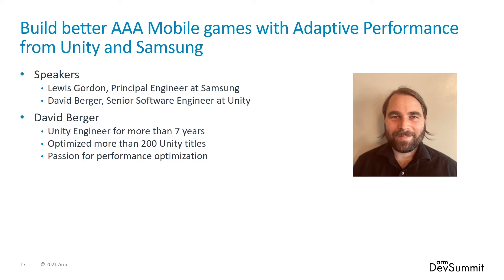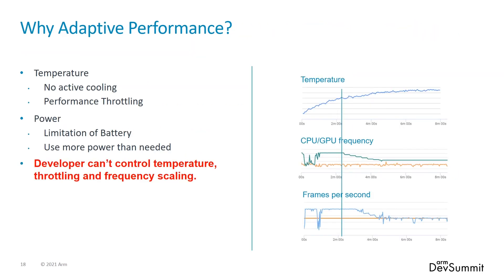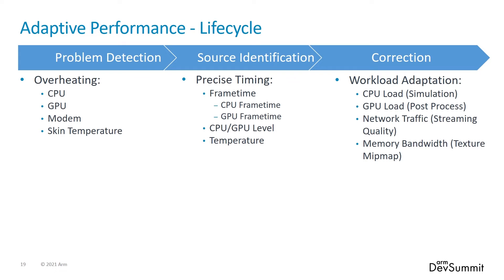Today I'm going to talk about adaptive performance, which helps you scale your content made in Unity flawlessly based on device performance. As we heard earlier, developers cannot control temperature throttling and frequency scaling, but Samsung enables us to do exactly that on their phones. The lifecycle looks like this: there is problem detection, such as overheating of components through throttling events; then source identification through temperature trends and CPU/GPU timing for bottleneck detection; and eventually a correction by changing the bottleneck load to decrease temperature.